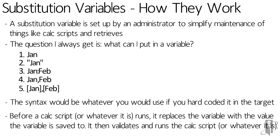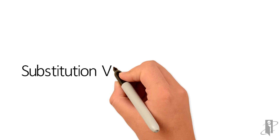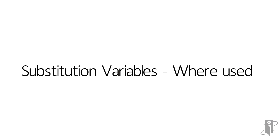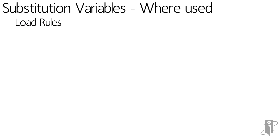Before a calc script or whatever it is runs, it replaces the variable with the value that the variable is saved to, then validates the script, and then executes. Where are substitution variables used? They're used all over the place. First, in load rules we can use them in SQL — in the select clause, as an alias in a select clause, as part of the where clause, or as a column header.